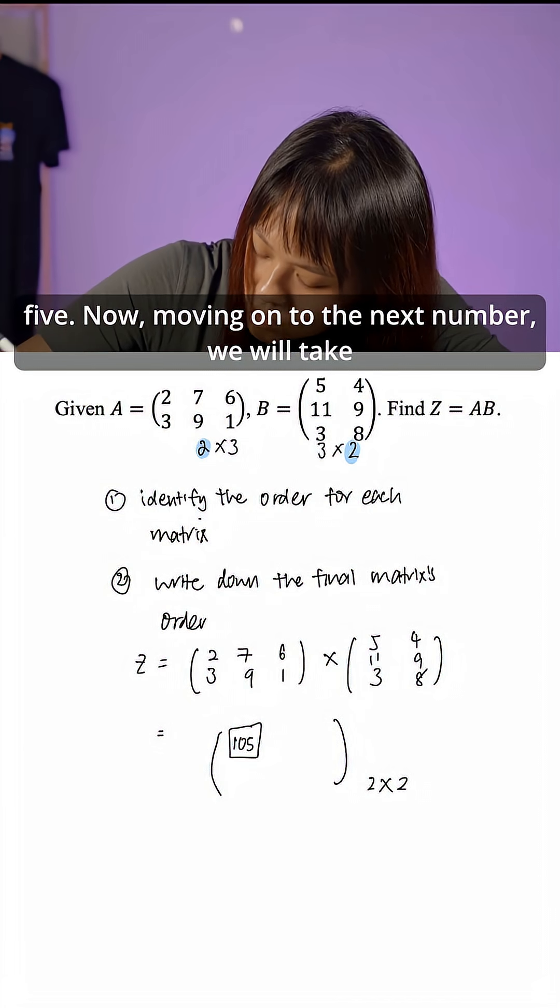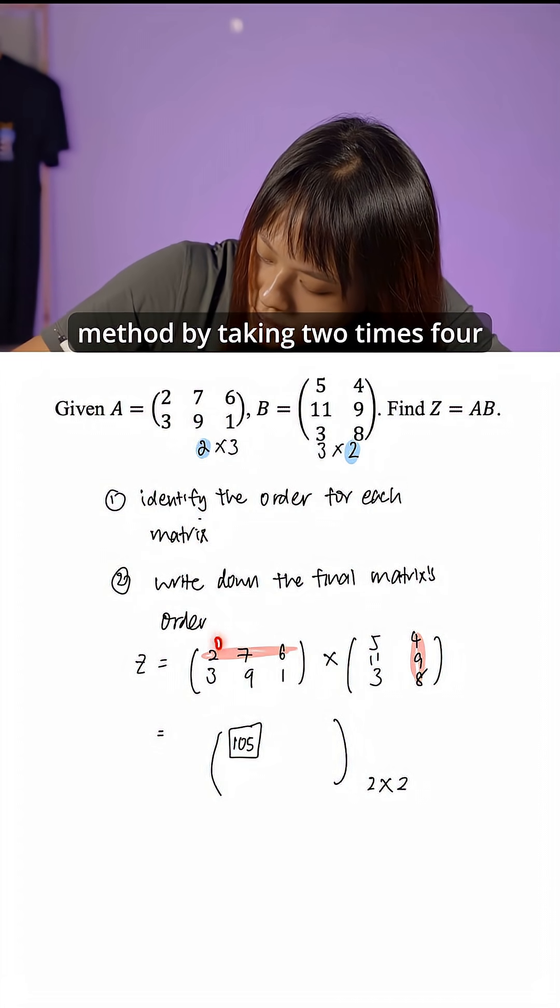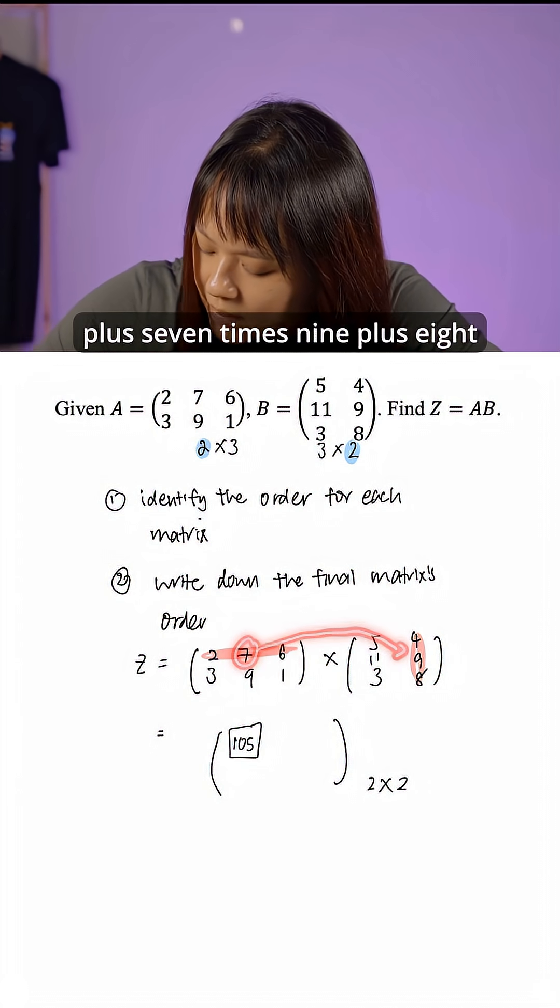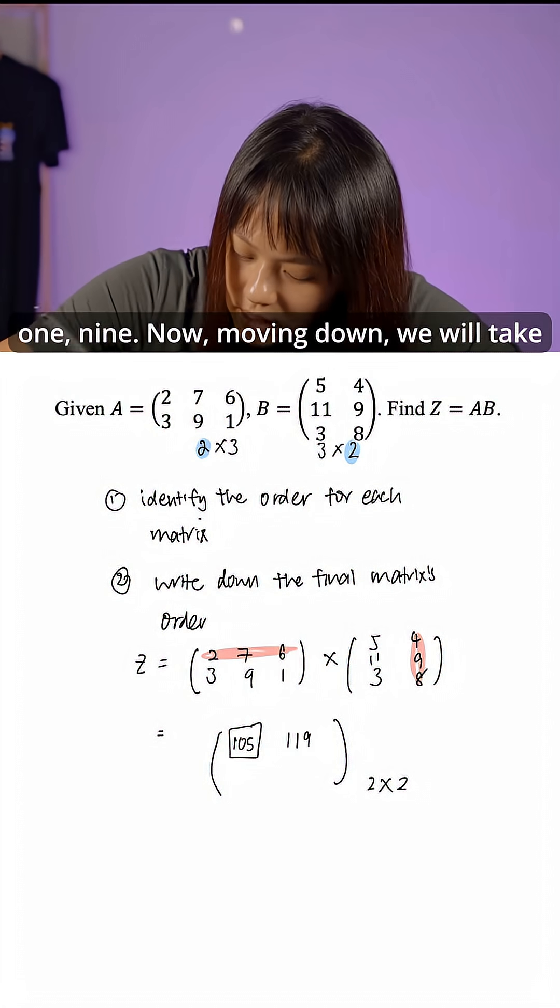Now moving on to the next number, we will take this multiply by this. So we'll do the same method by taking 2 times 4 plus 7 times 9 plus 6 times 8. That will give us 119.